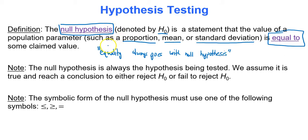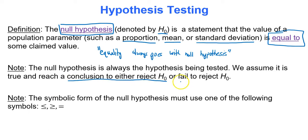Back when I was learning hypothesis testing, if I had known that one statement, it would have saved me hours of frustration identifying hypotheses. The null hypothesis is always the hypothesis that we are testing — it's always assumed to be true. Based on that assumption, we reach a conclusion on whether we reject or fail to reject it.